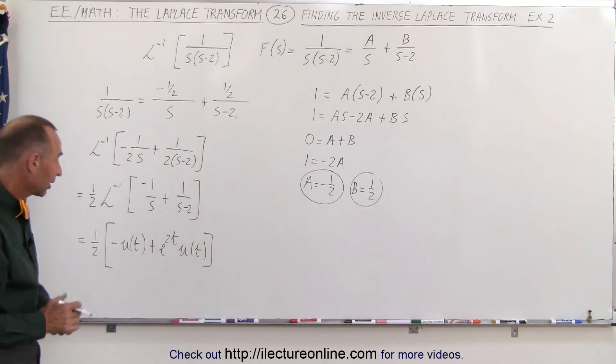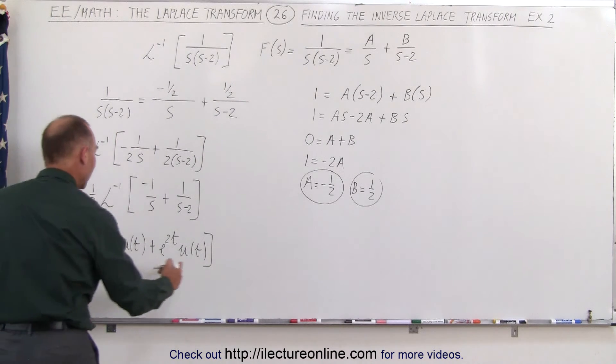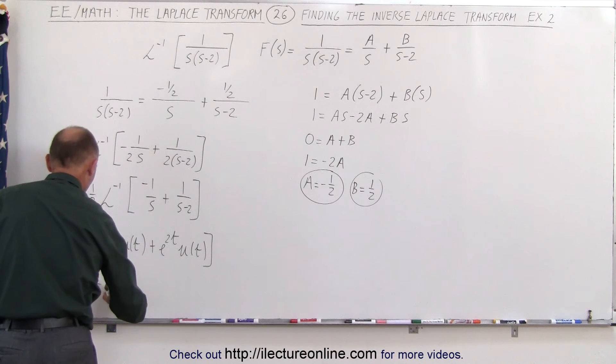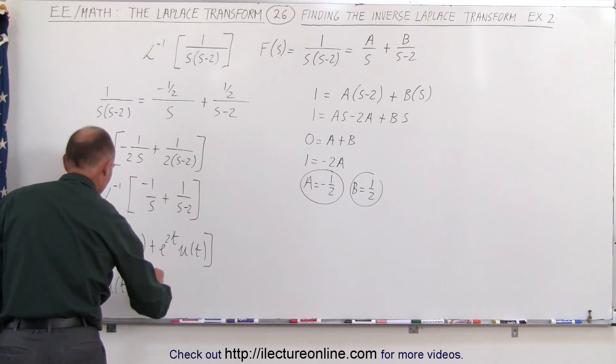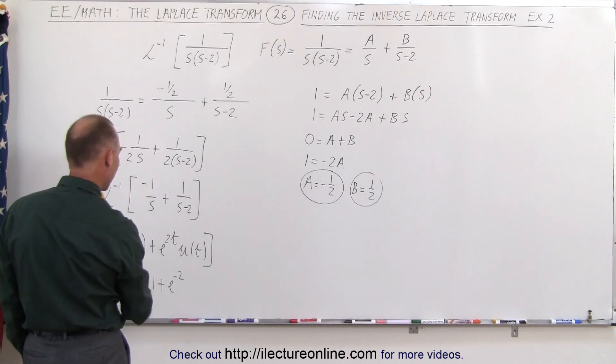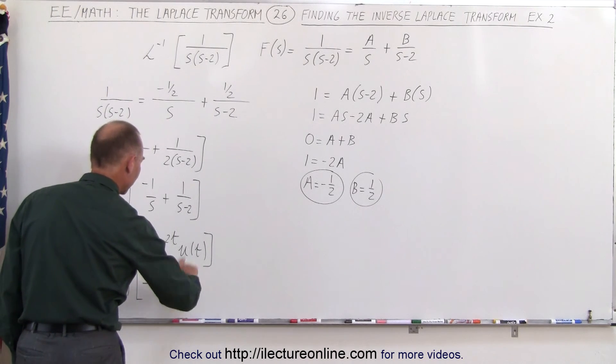And again, sometimes we don't write the u(t) but you can do it for clarity. And then you can say that we can factor out a u(t), so this becomes equal to 1 half times the step function u(t) times what's left, which is minus 1 plus e to the 2t.